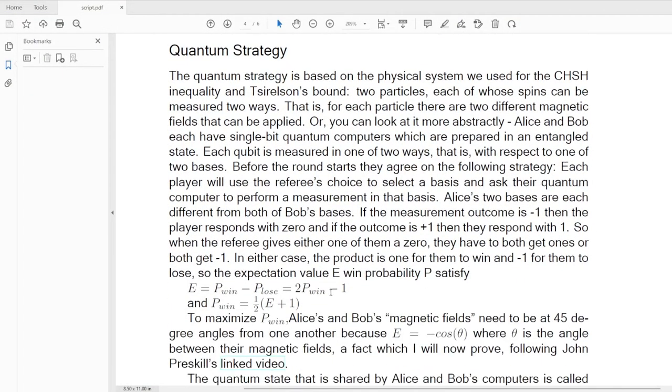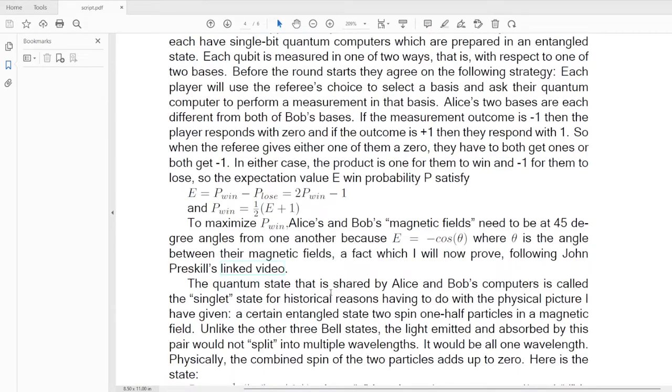So the expectation value E and the win probability P satisfy the following relationship. E is equal to two times P minus one and P is equal to one-half E plus one. To maximize the win probability, Alice and Bob's magnetic fields need to be at 135 degree angles from one another because E equals minus cosine theta, where theta is the angle between the magnetic fields. This is a fact I will now prove following John Preskill's video. And there is a hyperlink in the script pointing to that video.